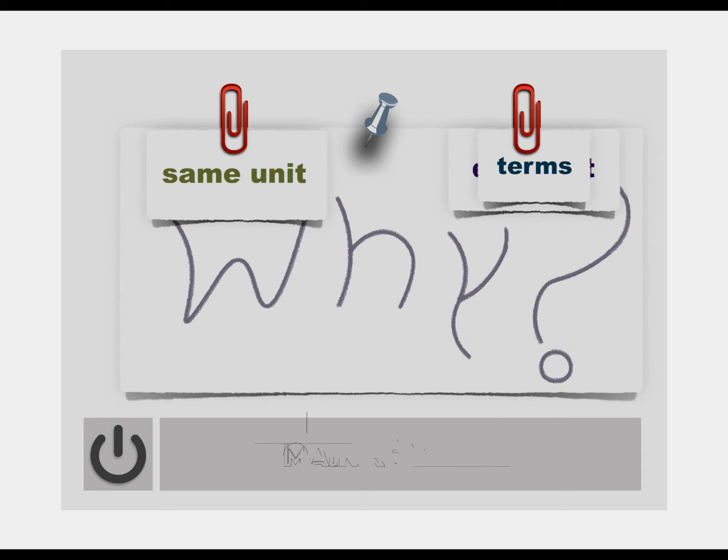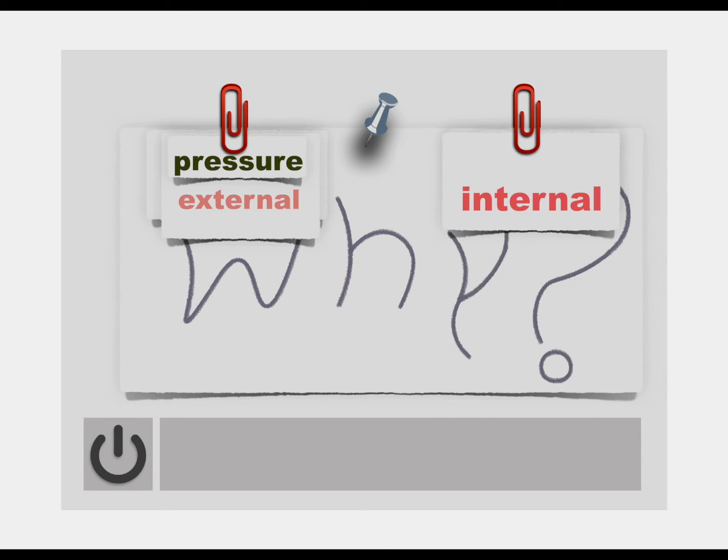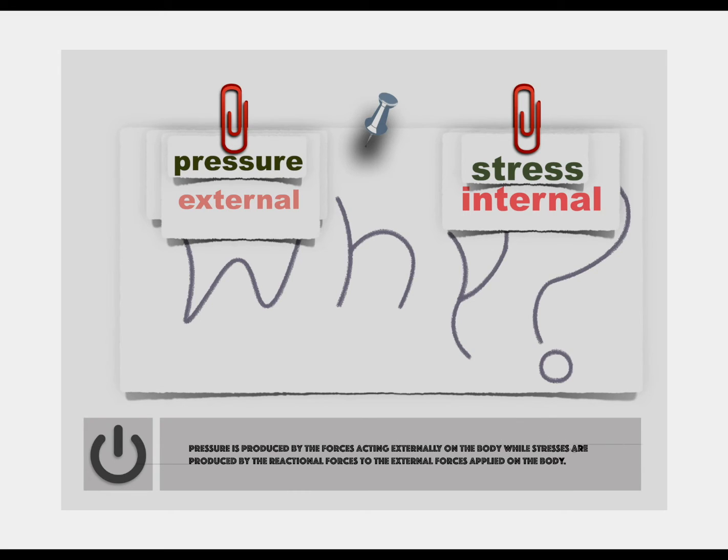Here is a reason why. The major concept that makes pressure different from stress is that it always acts externally. Pressure will always be external. While stress is always internal. Pressure is produced by the forces acting externally on the body. While stresses are produced by the reactional forces to the external forces applied on the body.